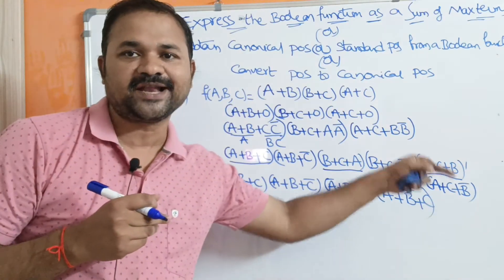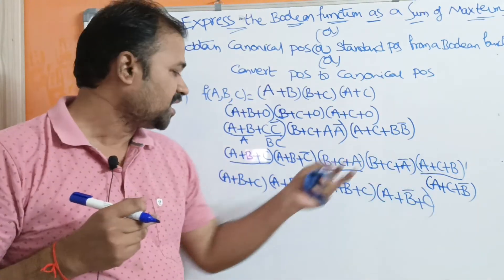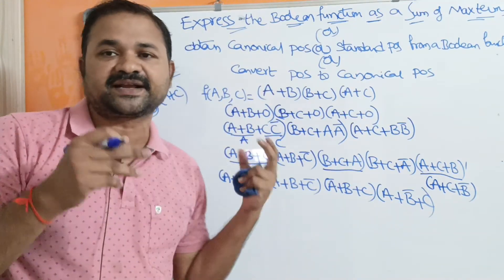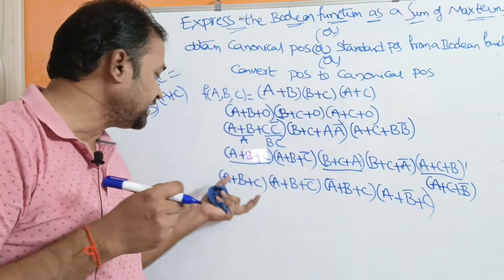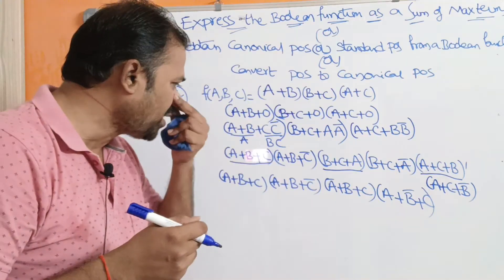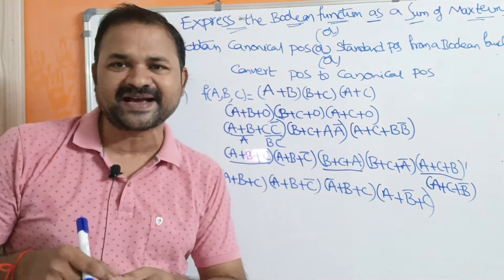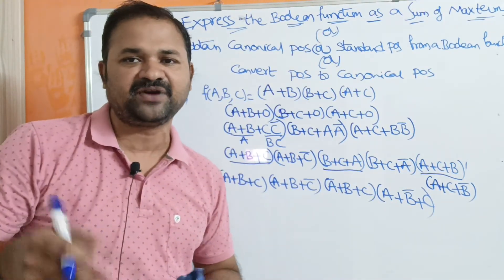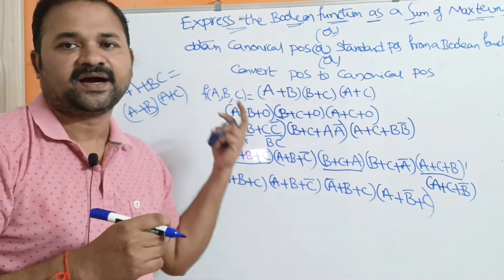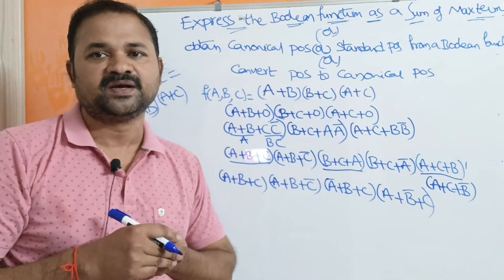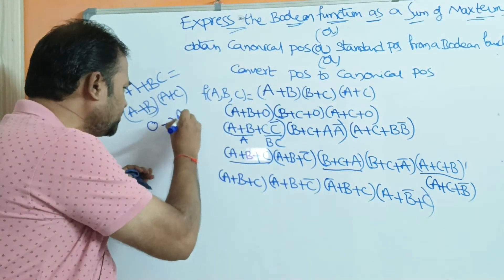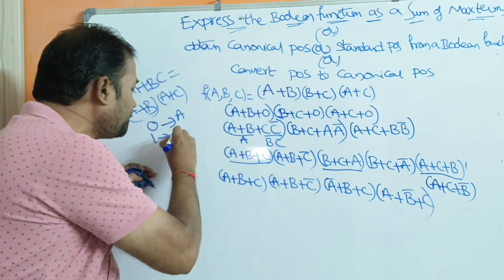This result is in the form of canonical POS or standard POS, because each sum term (max term) contains all the variables. If we want, we can also write this in the form of max terms using M notation — M0, M1, and so on.